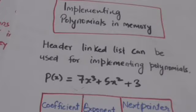When this polynomial is implemented by header linked list in memory, the header node represents a zero polynomial and each term of the polynomial is represented by a node of the linked list.